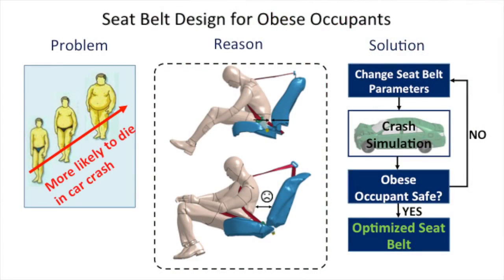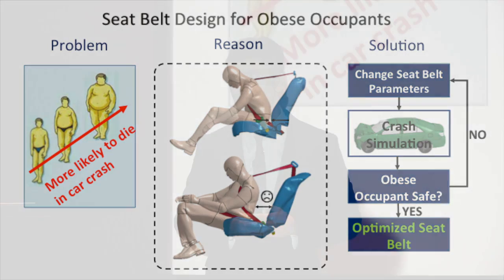In the picture on top, you can see what happens for a non-obese occupant in a frontal crash with the current standard seatbelt. This is how we want the occupant to look like — the pelvis close to the seatback and the upper body angle ready for airbag deployment. Now, compared to the picture at the bottom, we see an obese occupant under the same condition. He has moved much more forward and is not ready for airbag deployment. One reason for that is that he has a big body mass and the seatbelt force is not big enough to restrain him.